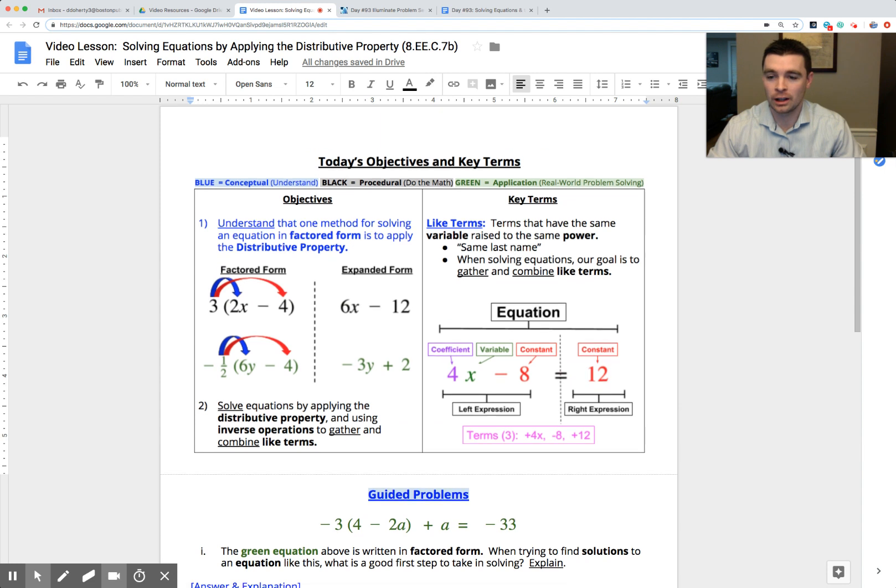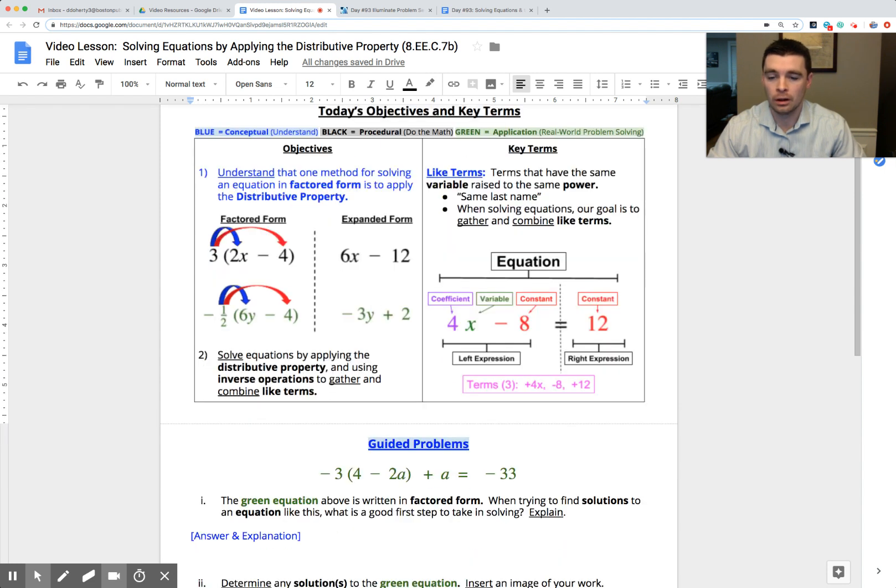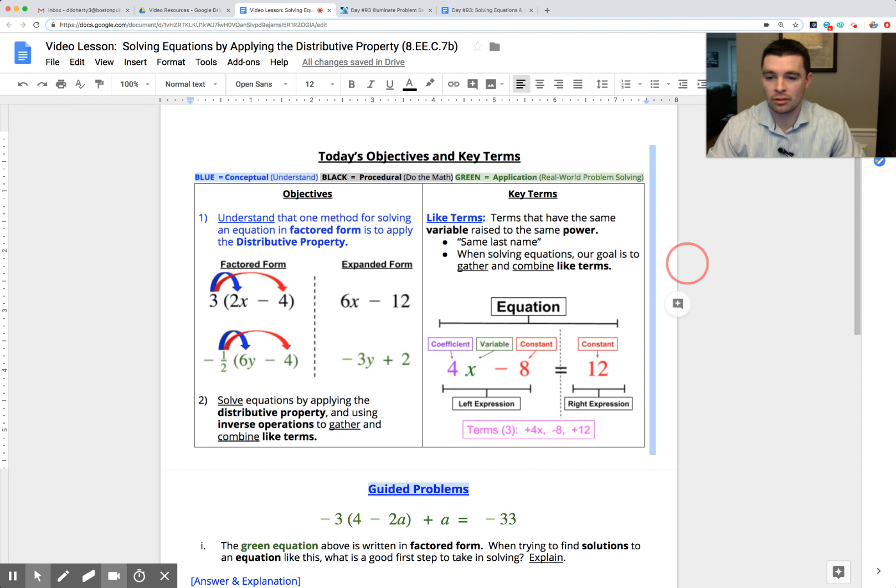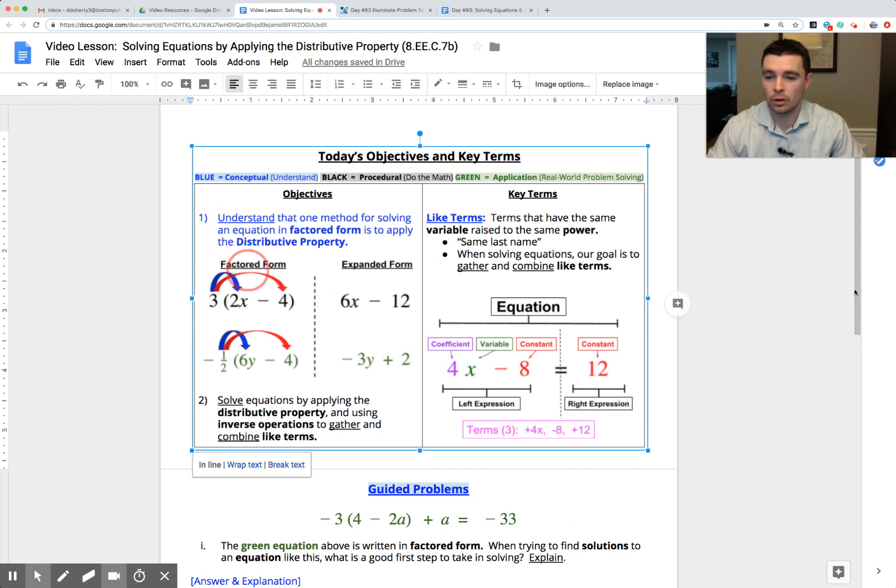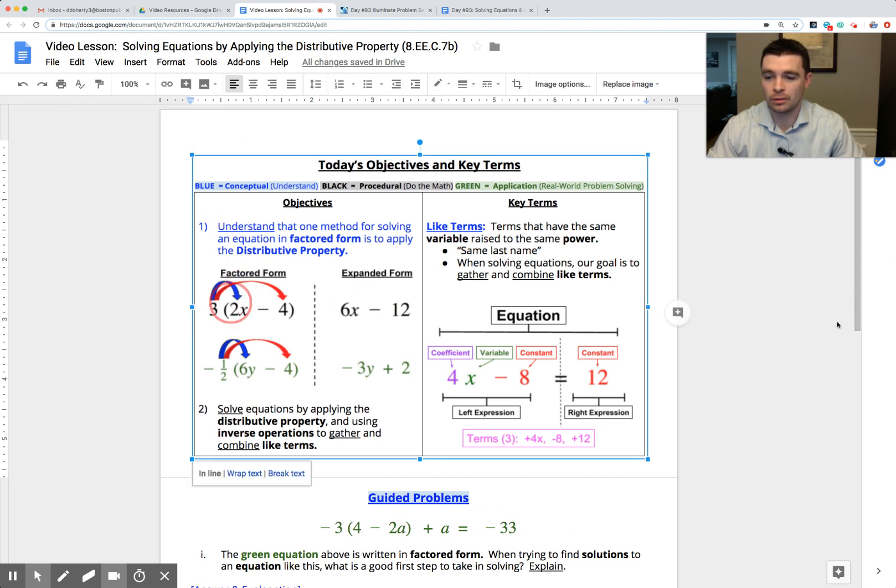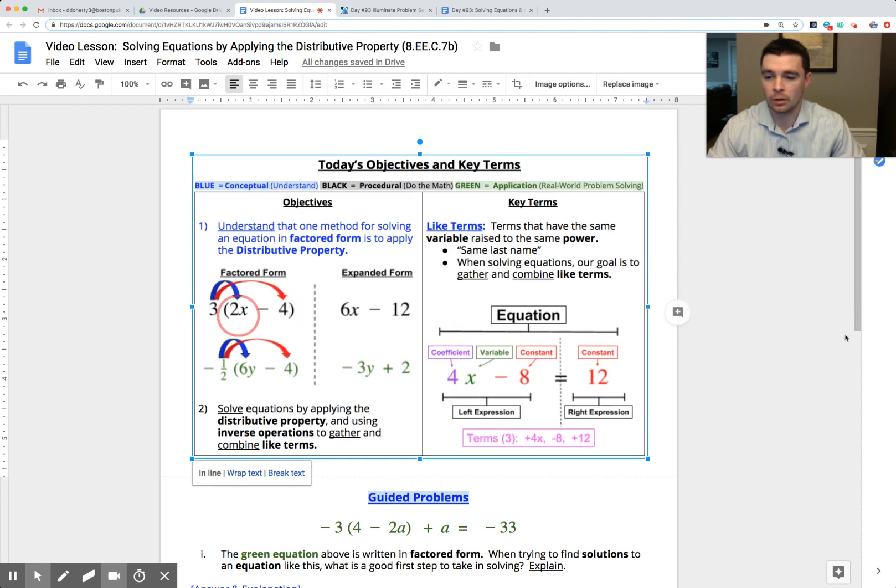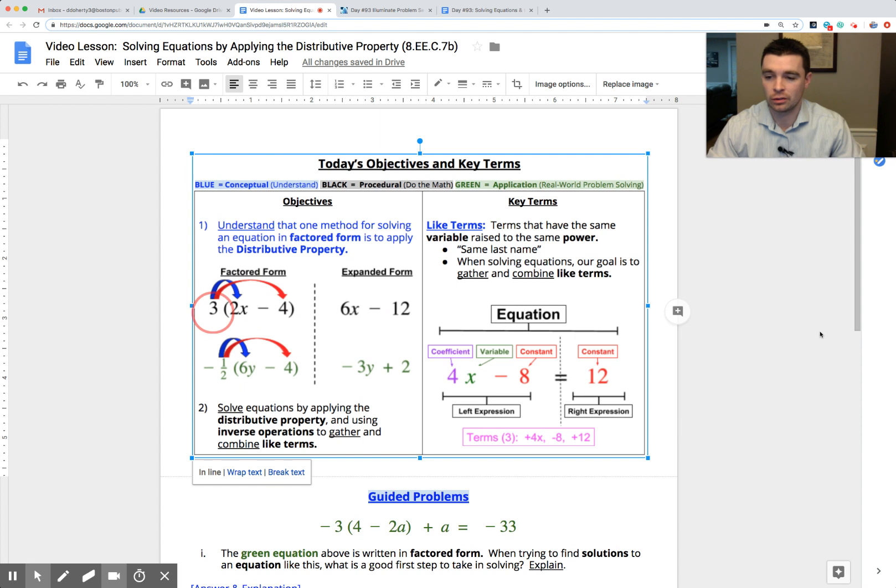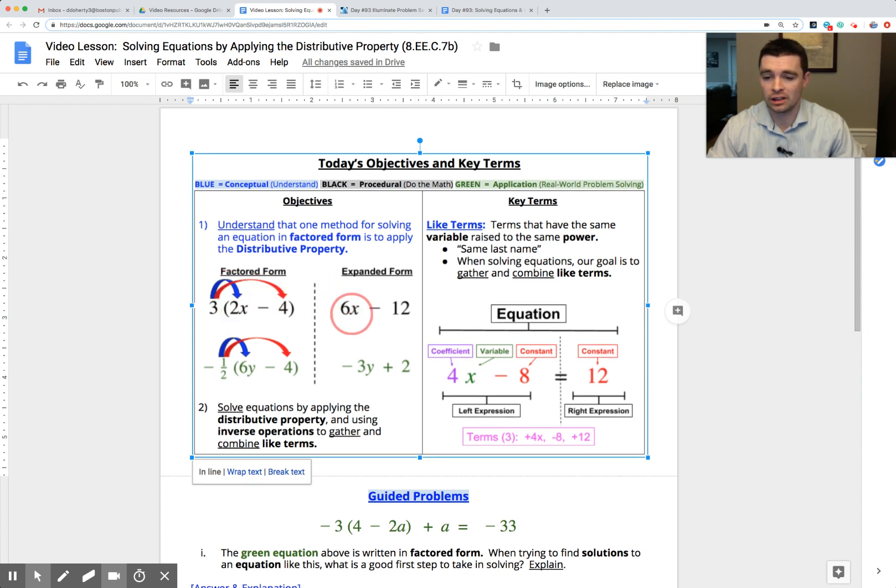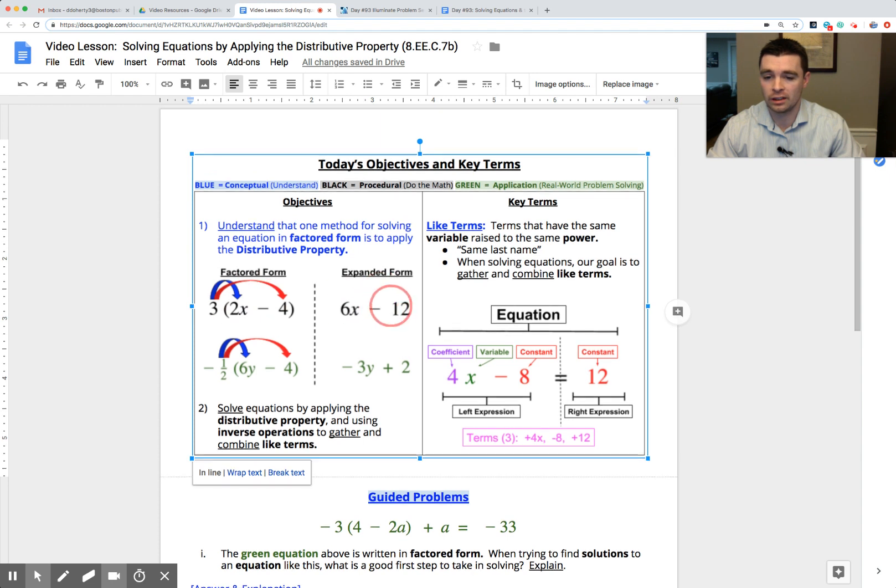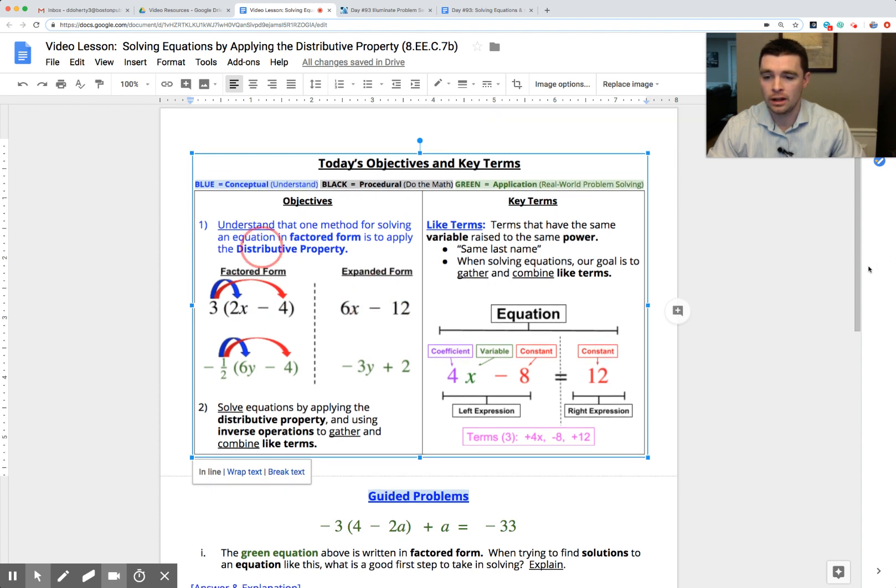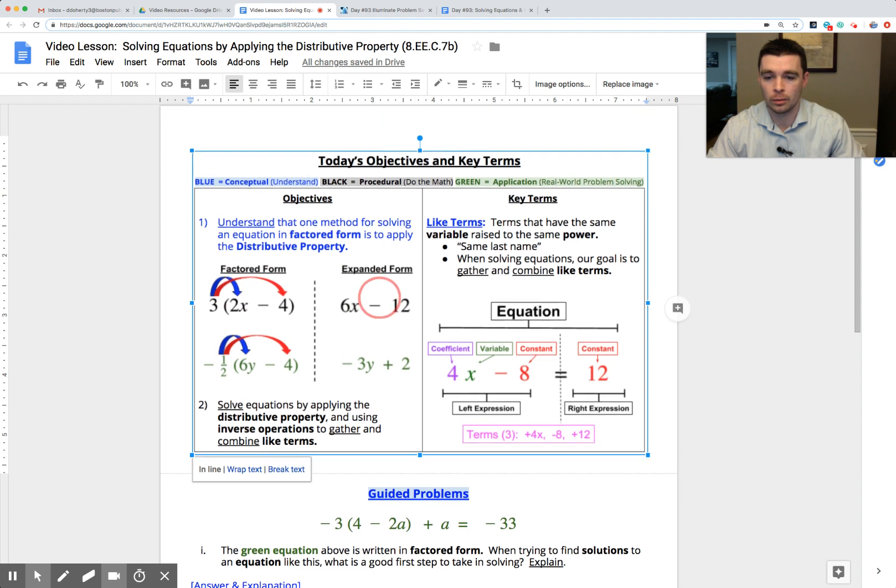Let's take a look at how we work with the distributive property. As you should remember from yesterday, if you were with us, factored form and expanded form. Factored form is when we take two or more terms, in this case 2x and negative 4, and we factor out a common multiple. In this case, 3 has been factored out of the variable term 2x and the constant term negative 4. So we could distribute that 3 back out: 3 times 2x gives us 6x for the variable term, 3 times negative 4 gives us negative 12 for the constant term. And this skill of going from factored form to expanded form will be key today.